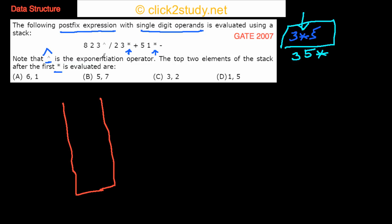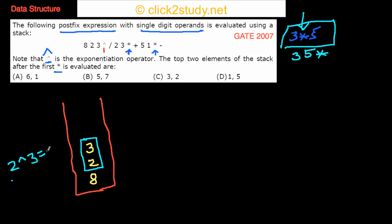I see 1, I push it onto the stack. I see 2, I push 2 onto the stack. I see 3, I push it onto the stack. Then I see the first operator — exponentiation. I operate on the top two operands: pop them out, apply exponentiation (2 raised to 3 = 8), and push the result 8 back onto the stack.